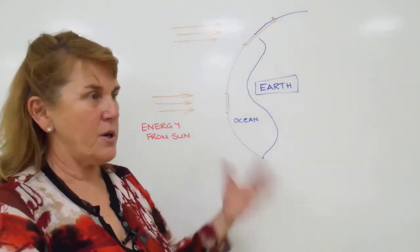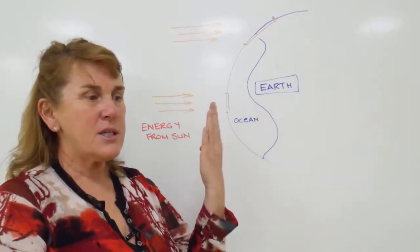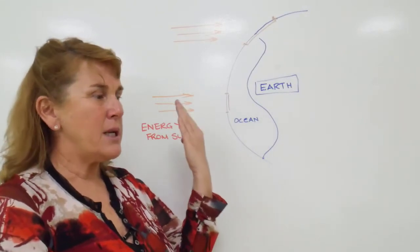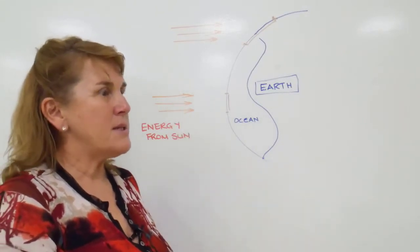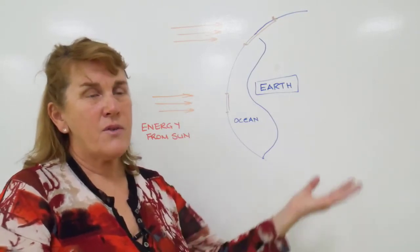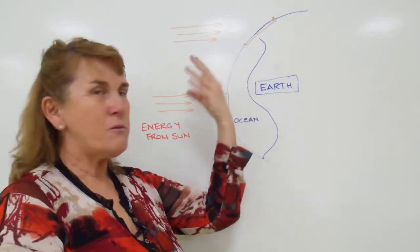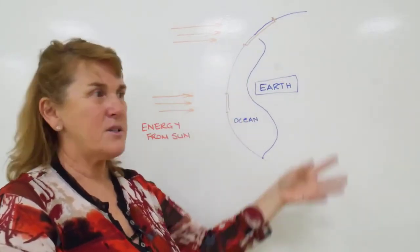It drives the hydrologic cycle: evaporation, condensation to form clouds, and ultimately precipitation. There's a sink of energy to cause the evaporation, which is stored as potential energy in the clouds, and then when it rains we release that energy again.